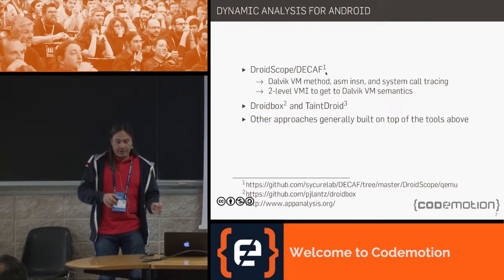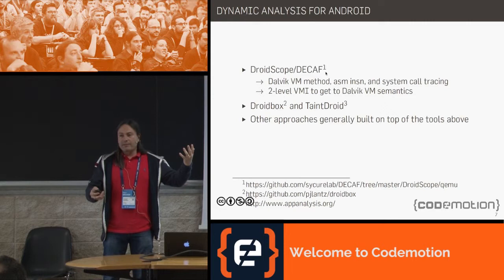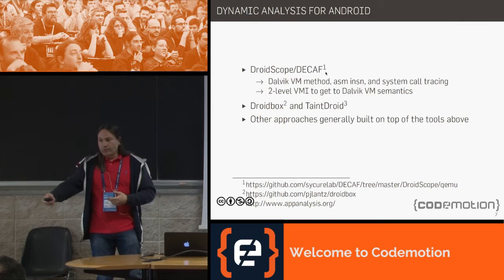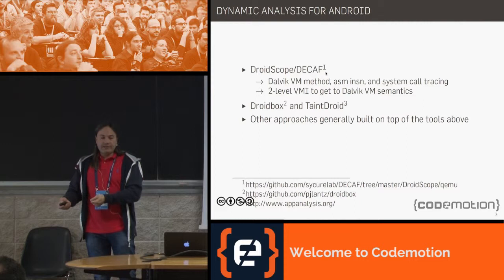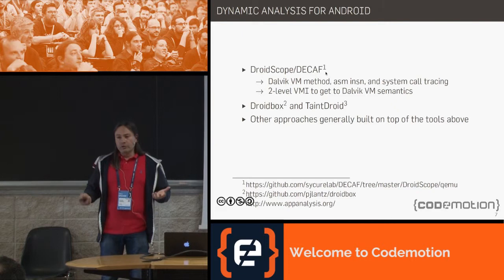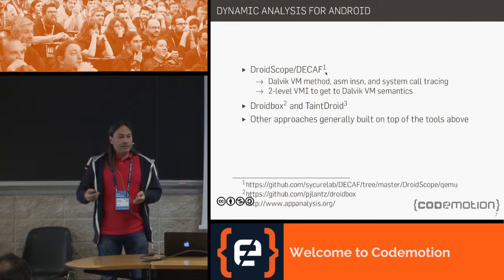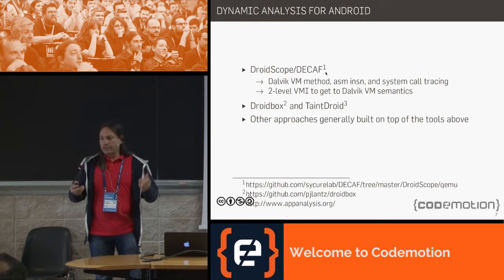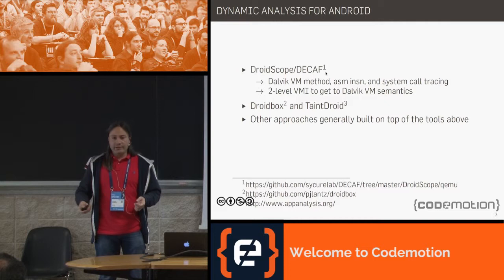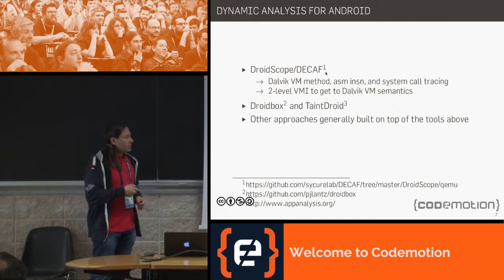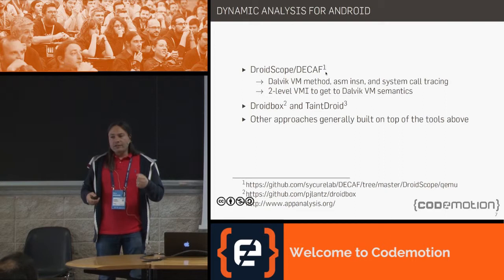Android applications are written in Java but can invoke native code, so some semantics are in Java and some in binary. When you open a file, create a socket, or create a process, those behaviors manifest as system calls — Android is a modified Linux kernel. What's less clear is how to observe Android-specific behaviors: SMS, contact list access, GPS. These don't exist in traditional Unix/Linux/Windows system call interfaces. Most approaches look at two different levels of analysis and need to keep them in sync.